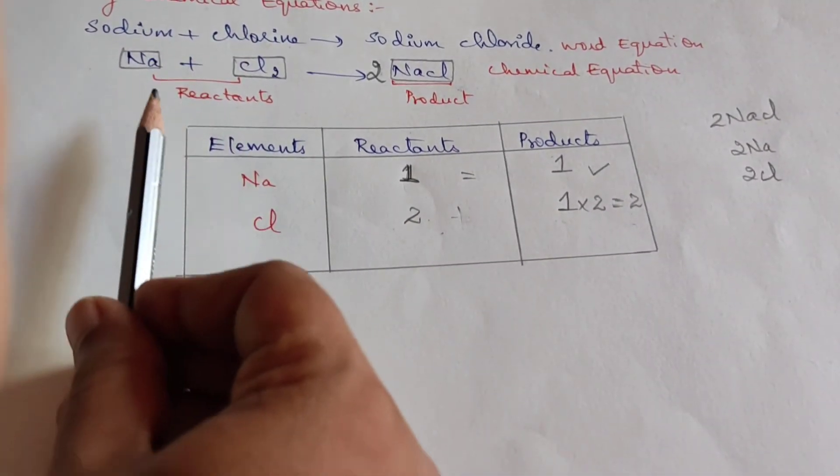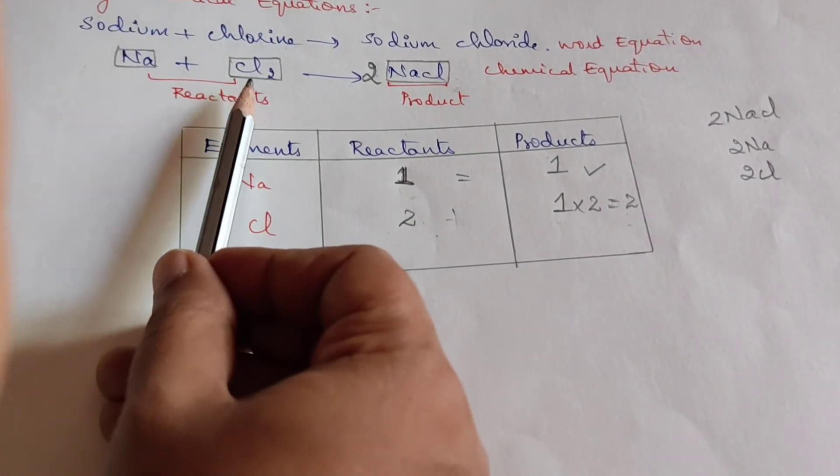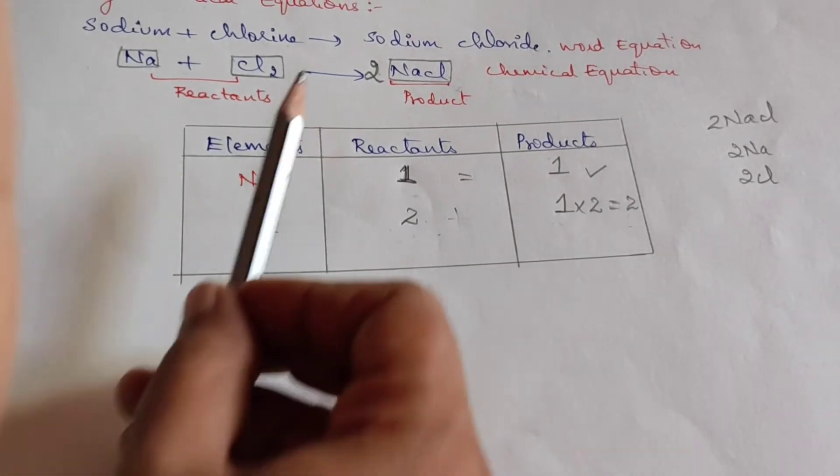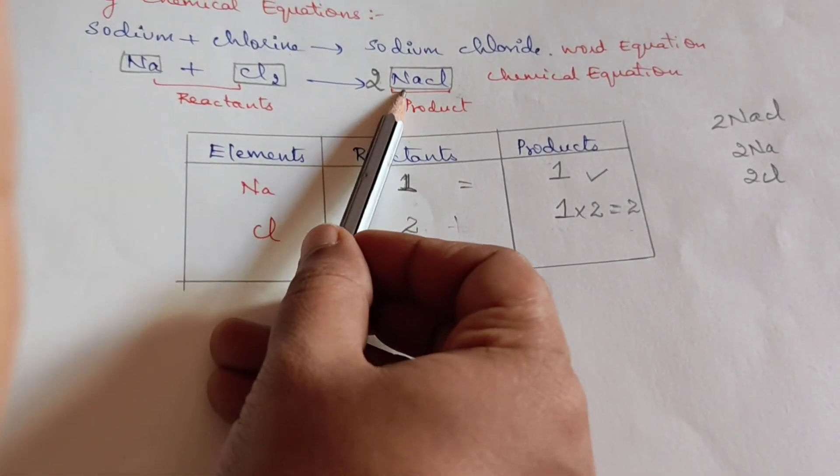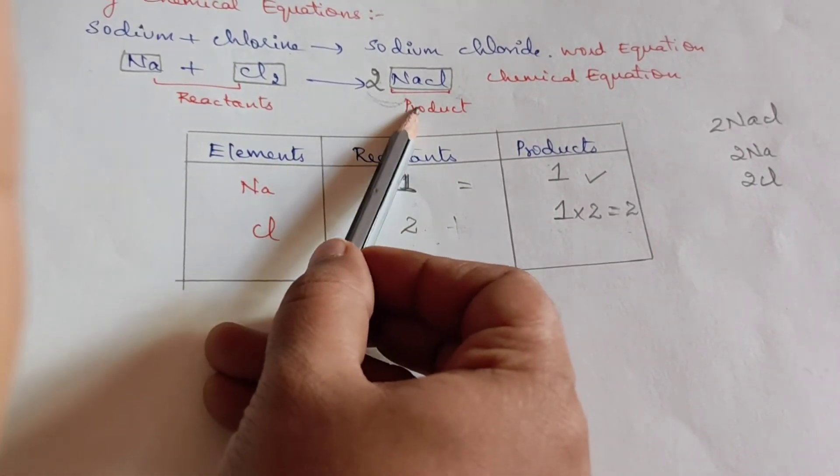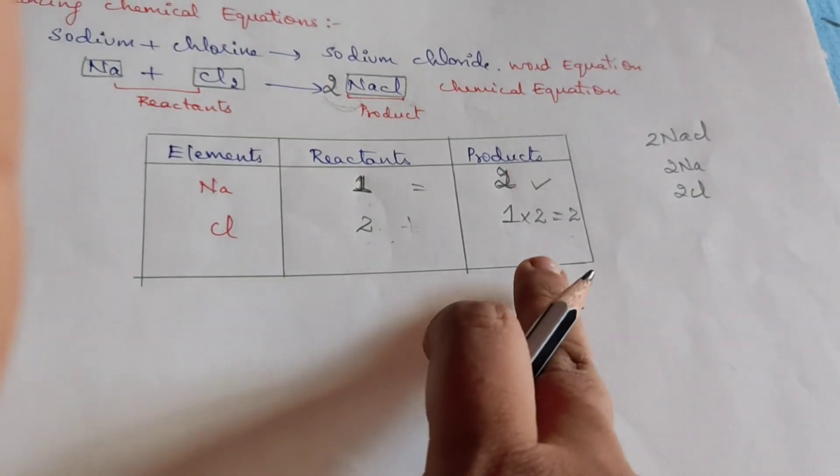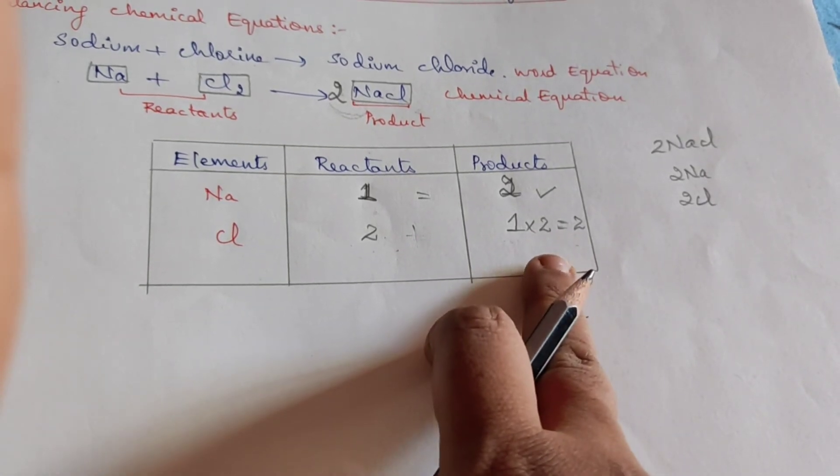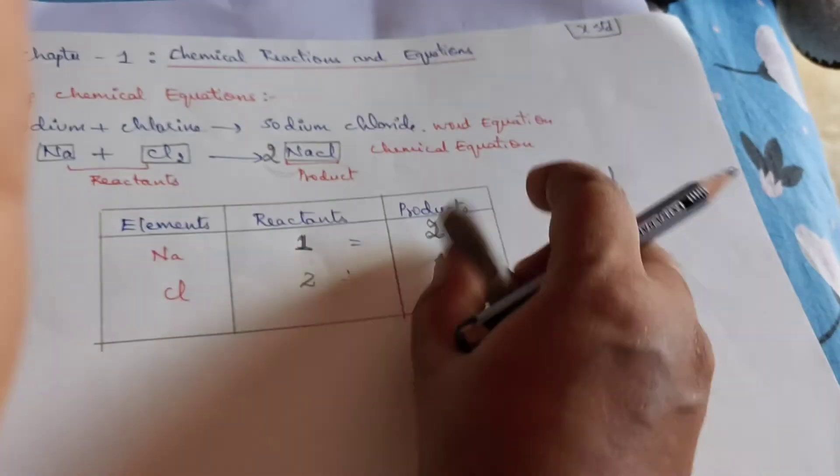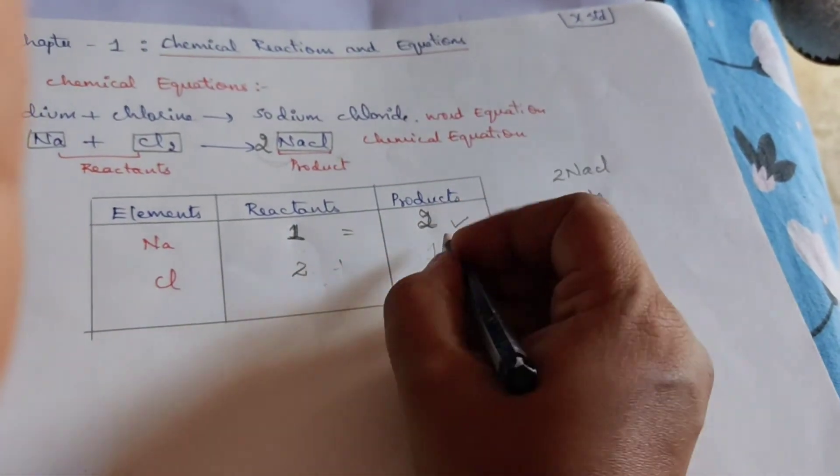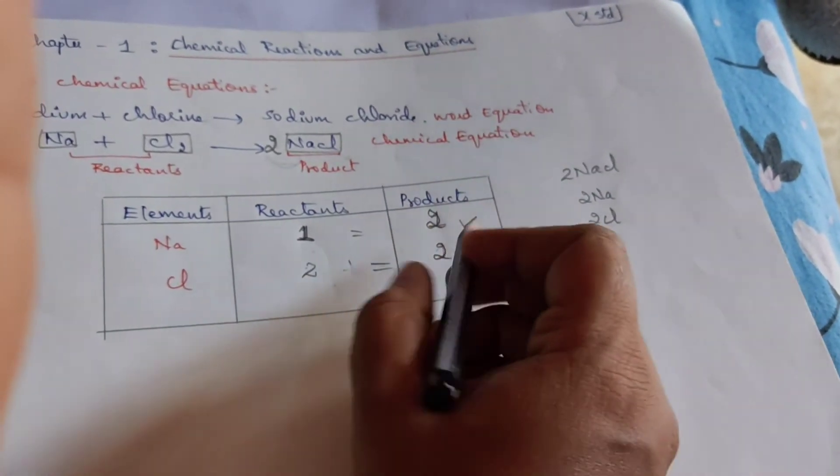And hence, now let us check. Na on reactant side is 1. Chlorine on reactant side is 2. Here, Na on product side, as I said, 2 Na, this became 2. And chlorine, as I said, it is 2. Now let us see here. 2 is equal to 2, so this is balanced.